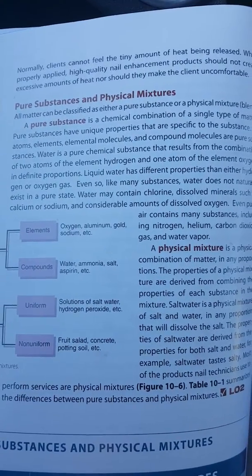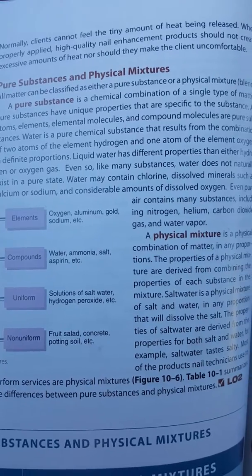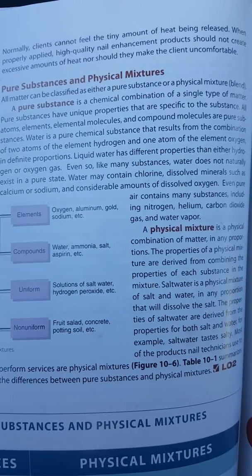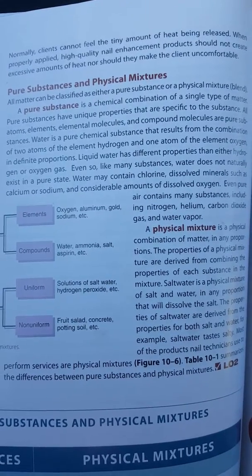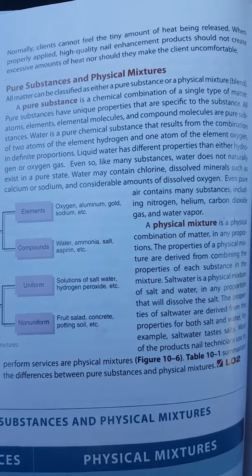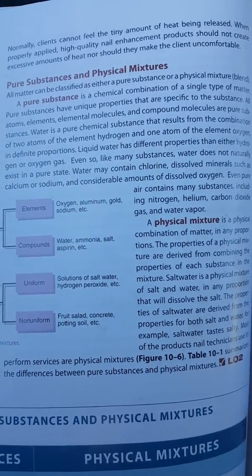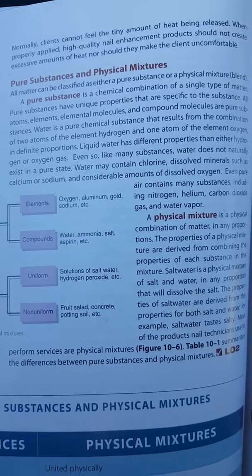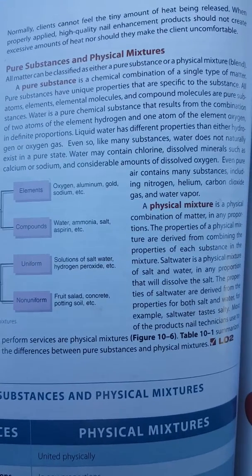Pure substances and physical mixtures. All matter can be classified as either a pure substance or a physical mixture or blend. A pure substance is a chemical combination of a single type of matter with unique properties specific to the substance. All atoms, elements, elemental molecules, and compound molecules are pure substances. Water is a pure chemical substance that results from the combination of two atoms of the element hydrogen and one atom of the element oxygen in definite proportions. Liquid water has different properties than either hydrogen or oxygen gas. Even so, water does not naturally exist in a pure state. Water may contain chlorine, dissolved minerals such as calcium or sodium, and considerable amounts of dissolved oxygen.